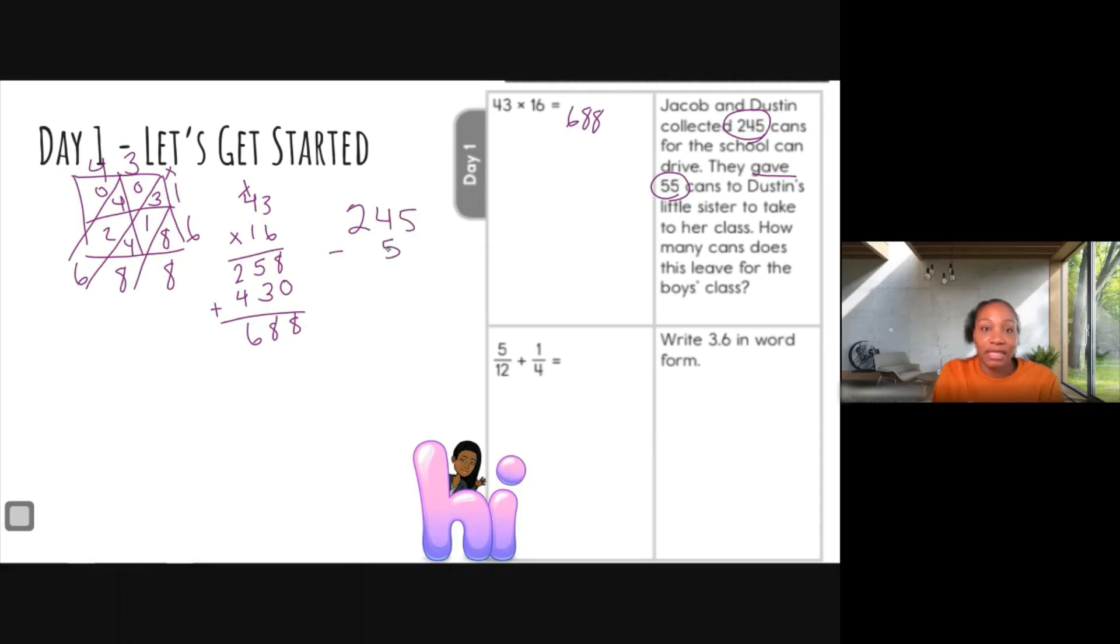So let's set up our problem. So I have 245, and we're going to subtract 55. Notice how I'm lining everything up by its place value. Okay, 5 minus 5 is 0. 4 minus 5, I cannot do that, so I need to borrow from the 2. Okay, that leaves me with 1 here in the hundredth place.